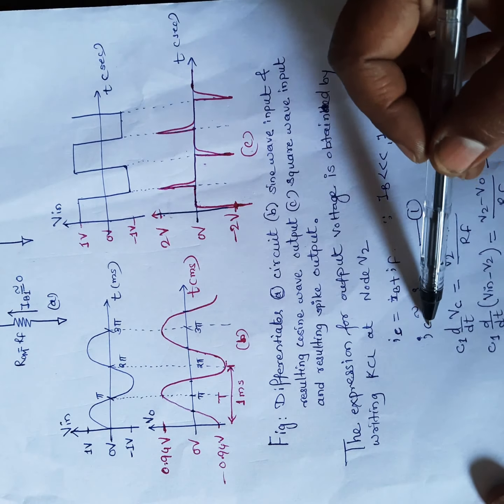The capacitor current ic is equal to C1 multiplied by d/dt of the voltage across the capacitor. The feedback current if is defined as v2 minus v0 divided by Rf, because this is the voltage at that node minus the output voltage divided by the resistance of the branch. So the equation becomes: C1 · d/dt(vc) = (v2 − v0) / Rf.